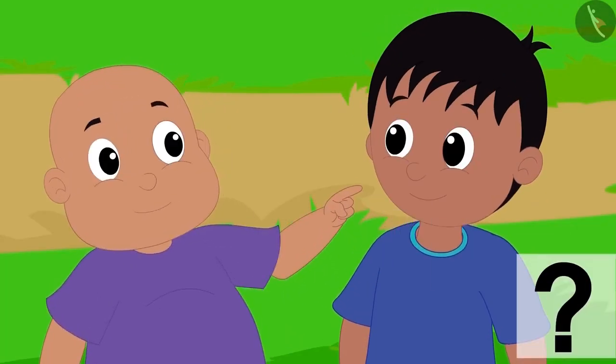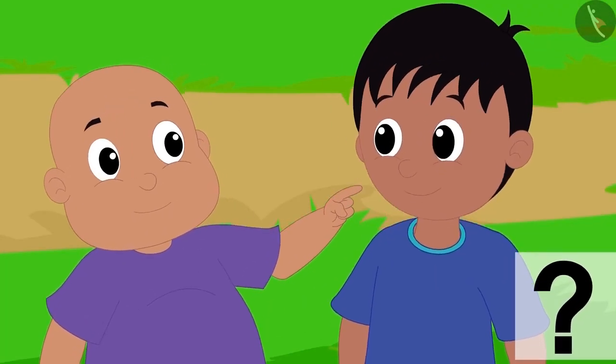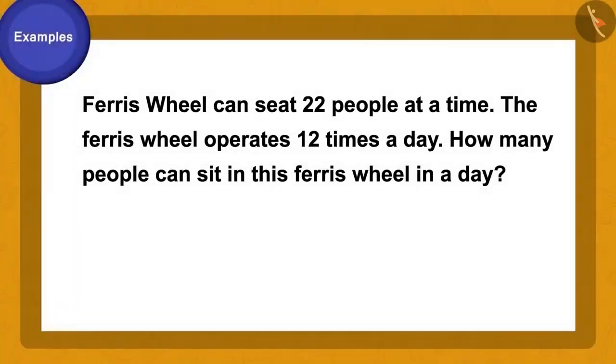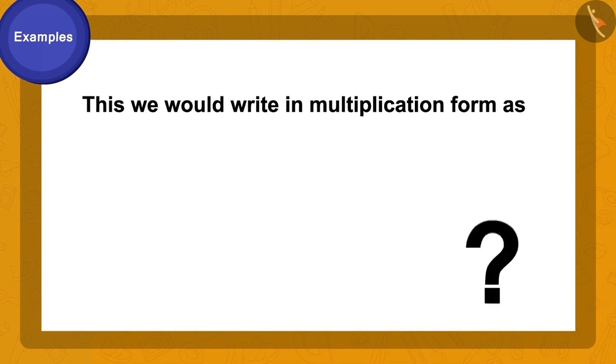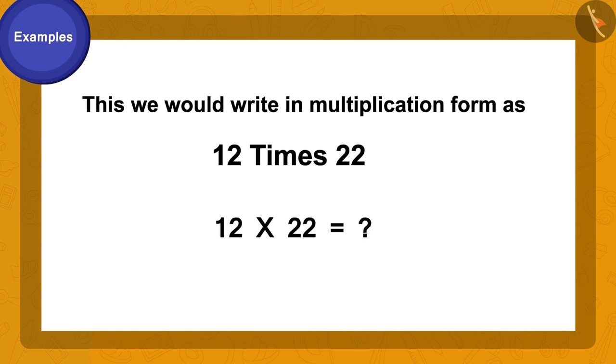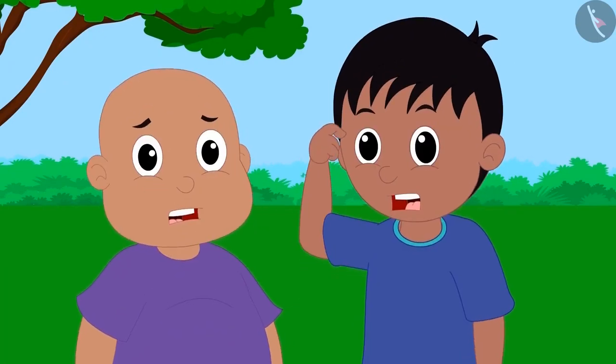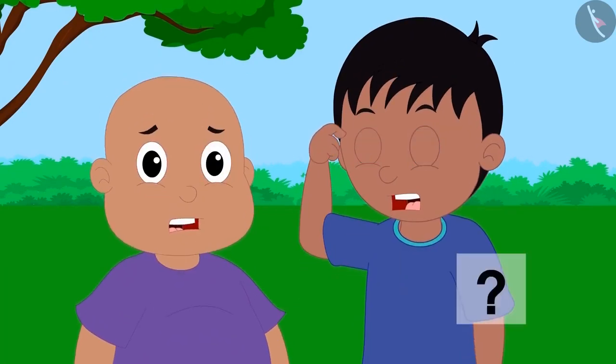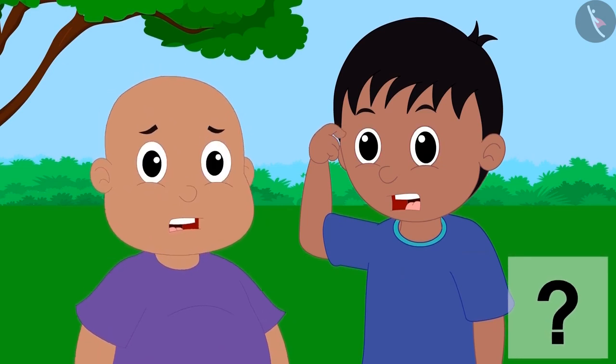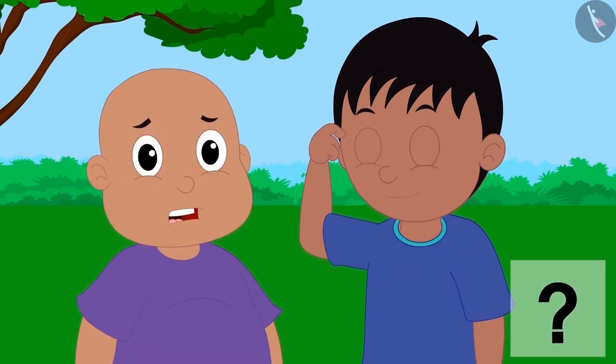Children, can you find the answer to Raju's question? At a time, 22 people can sit in it, and the Ferris wheel operates 12 times a day. How do we write this in the form of multiplication? 12 times 22. But we have only learned to multiply a two-digit number with a single-digit number. How do we calculate this now?